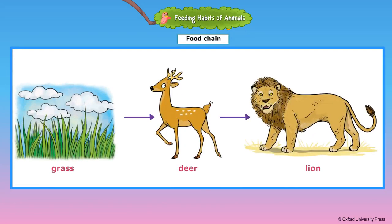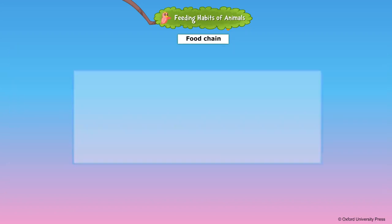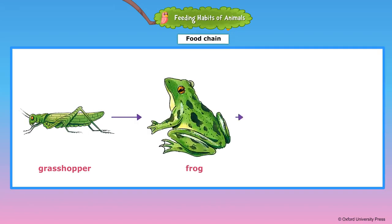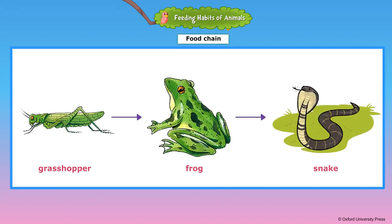Grass is eaten by deer, and deer is eaten by a lion or a tiger — this is called a food chain, most commonly found in forests. Grasshopper is eaten by the frog, and the frog is eaten by a snake — this is a food chain found in a grassland environment.